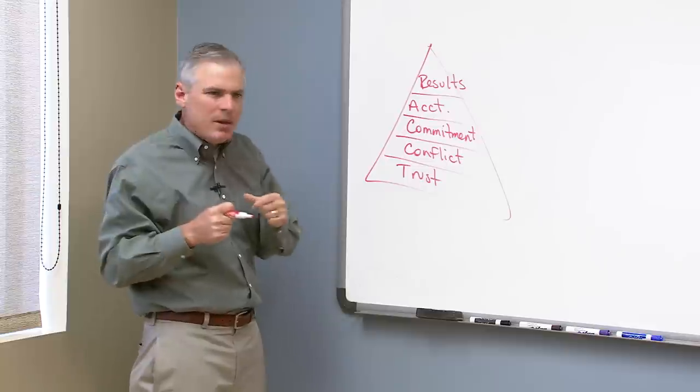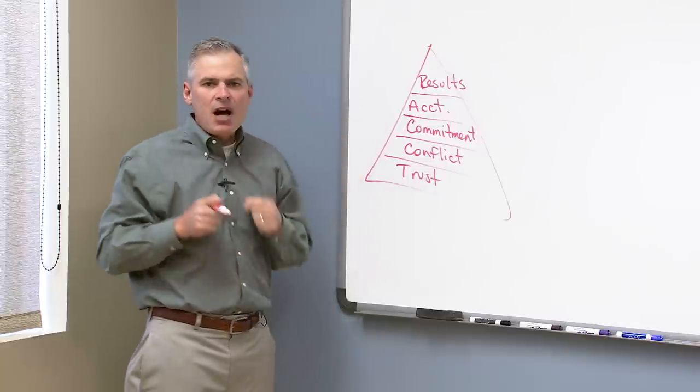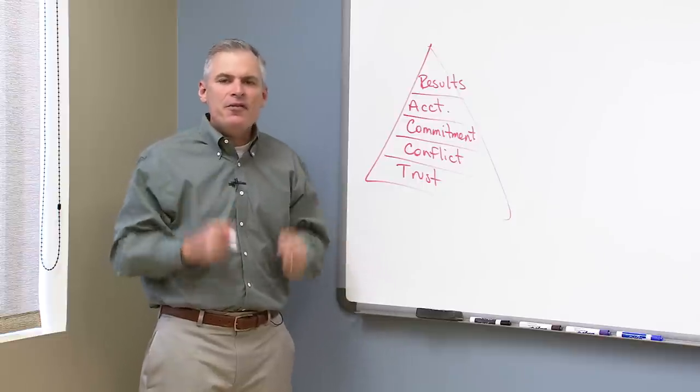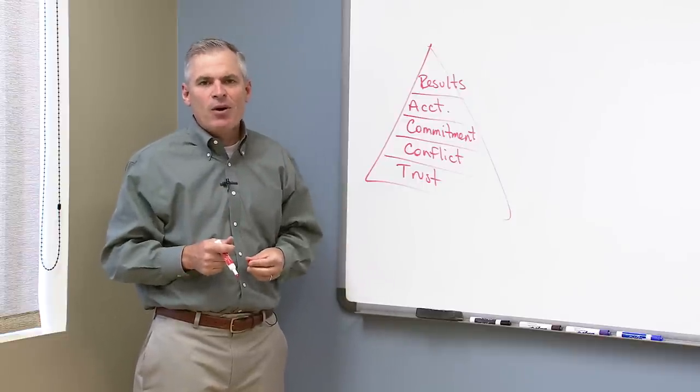Accountability is possible because there's been commitment. Commitment can be achieved because of conflict. And conflict is possible because people trust one another. And that is the first discipline of a healthy organization.